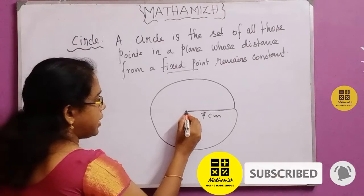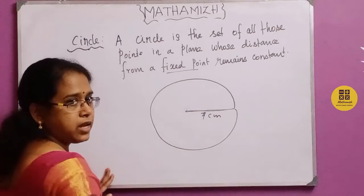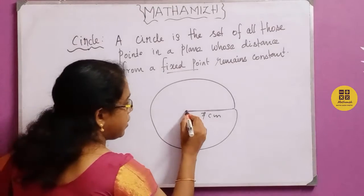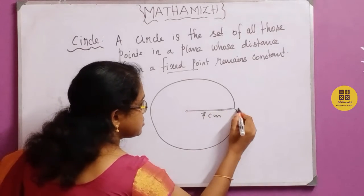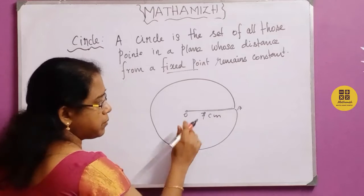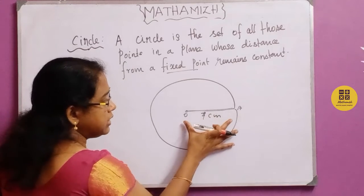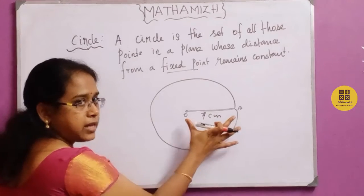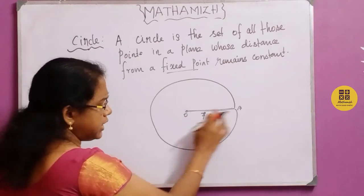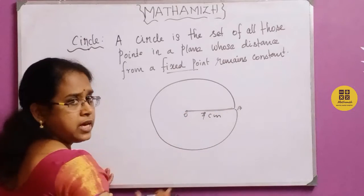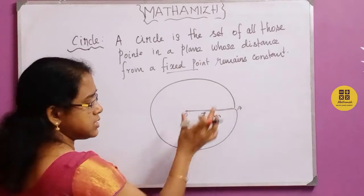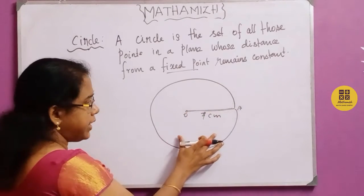If we take a fixed point, it is the center of the circle. This constant distance of 7cm is called the radius. It is the constant distance known as the radius.